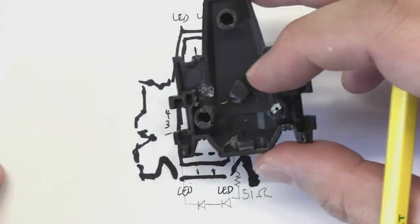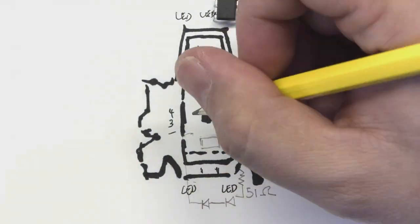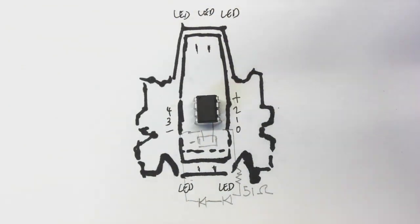I know I'm going to need to get a female JST connector into the fuselage so that it can provide power to the chip, so I'm tracing that in now.